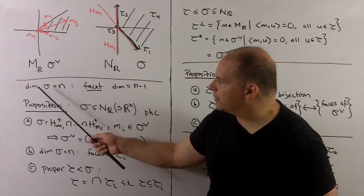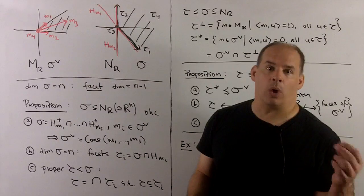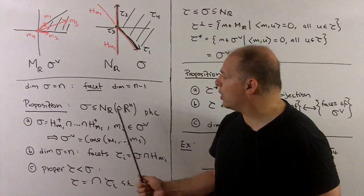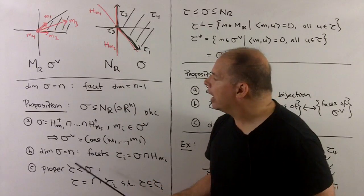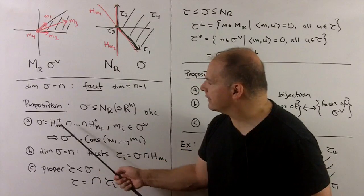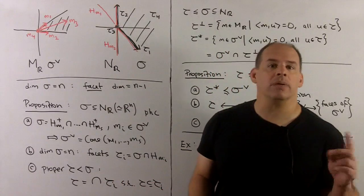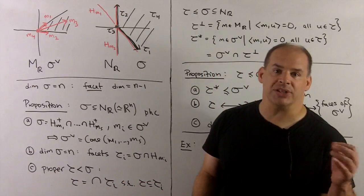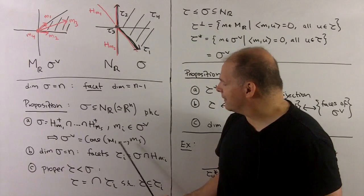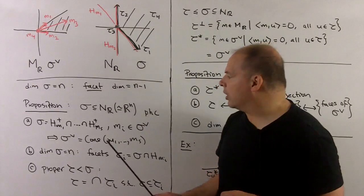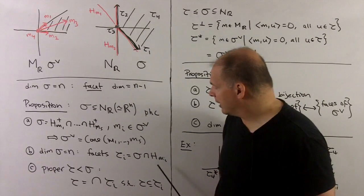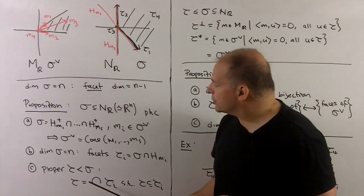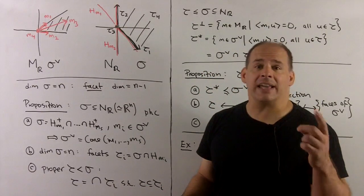Recall: if dimension of sigma equals n, then the facets are just the faces of dimension n minus 1. Proposition for facets: if sigma is a polyhedral cone of full dimension n, then the dual of sigma is the cone generated over m_1 through m_s from the halfspace presentation. We get the facets by intersecting sigma with the hyperplanes from the halfspace presentation. Finally, any proper face tau is the intersection of all facets containing tau.